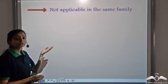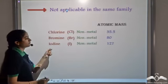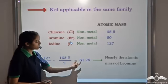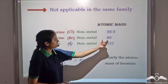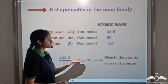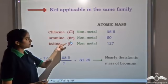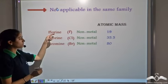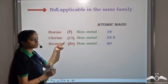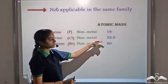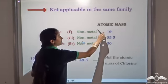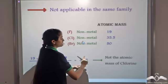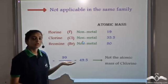Another problem with his law was that it was not applicable within the same family. We have seen that for the family chlorine, bromine, iodine, when placed in increasing order of atomic mass, the average is nearly equal to the atomic mass of bromine, so the law of triads is valid. However, fluorine also belongs to the same family of non-metals showing the same appearance and reactions. When he arranged fluorine, chlorine, bromine in increasing order of atomic mass and took the average of the first and the third element, it came out to be 49.5, which was not equal to the atomic mass of chlorine. Hence Döbereiner's law of triads failed.